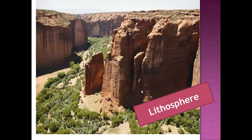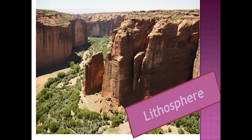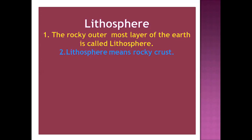Let us see what is the meaning of lithosphere. In this picture you can see land and plateaus — some part is plains, some part is plateaus. From this you can understand the hard surface of the earth, which includes stones, earth, and sand — all of this comes under the lithosphere. The rocky outer layer of the earth is known as the lithosphere.